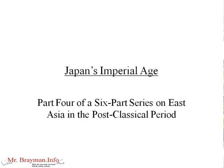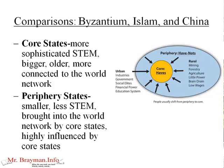Before we start looking at Japan, I want to return to this theory of the core and periphery states. You've seen this screen before, and there are comparisons between Byzantium, Islam, and China as the core states, and then places like Eastern Europe, West Africa, Korea, Japan, and Vietnam as the periphery states. Core states are more sophisticated in terms of STEM capabilities — they're bigger, older, and more connected to the world network.